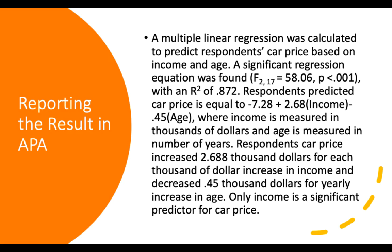For APA format reporting: 'A multiple linear regression was calculated to predict respondents' car price based on income and age. A significant regression equation was found, F(df), p less than 0.001, with an R-squared of 0.872. Respondents' predicted car price equals negative 7.28 plus 2.688 times income minus 0.455 times age, where income is in thousands of dollars and age is in years. Car price increased $2,688 for each thousand-dollar increase in income and decreased $450 for each yearly increase in age. Only income is a significant predictor of car price.'